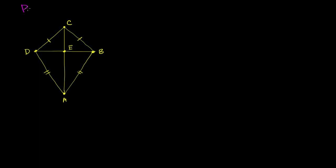What I want to do in this video is prove that segment AC is perpendicular to segment DB, based on the information in this diagram. We're given that this side has the same length as that side, and this side has the same length as that side. We're going to use one or more of our congruence postulates.